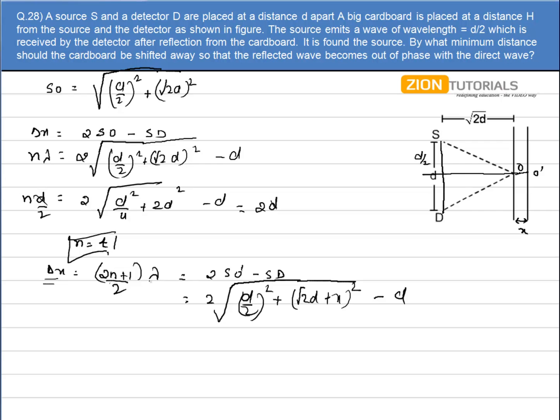And substituting the value of n equal to 4 and lambda equal to D/2, I get 2 times (4+1)/2 into D/2. So it comes out to be 9D/4 is equal to 2 times under root of (D/2)² plus (√2D + x)² minus D.